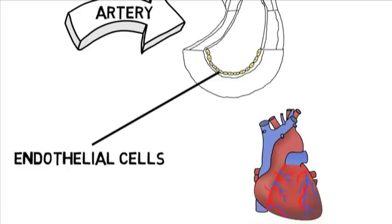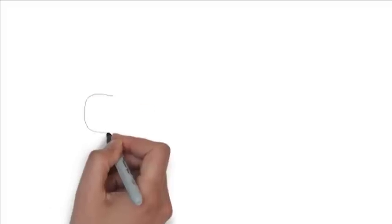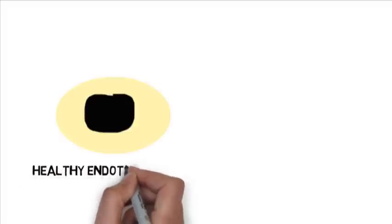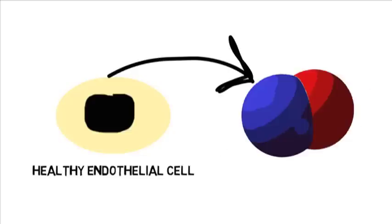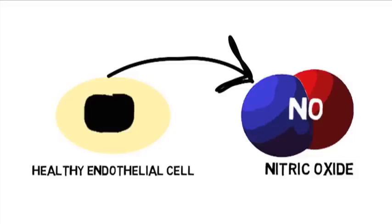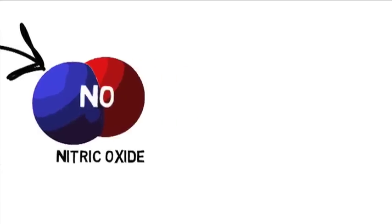But how does the endothelium relate to cardiovascular function? Healthy endothelial cells produce a naturally occurring molecule called nitric oxide, also known as NO. NO is crucial to your well-being and specifically your cardiovascular system. In fact, it's now known as one of the most significant molecules in the body.